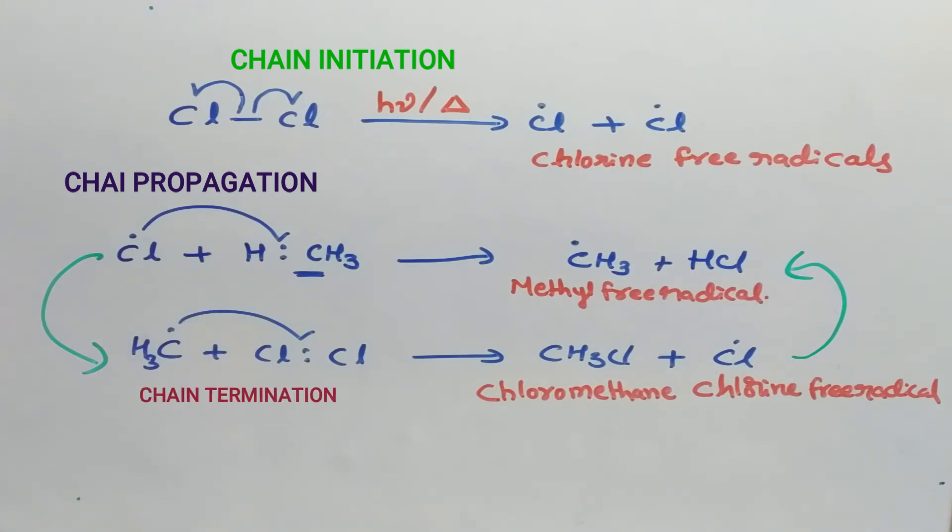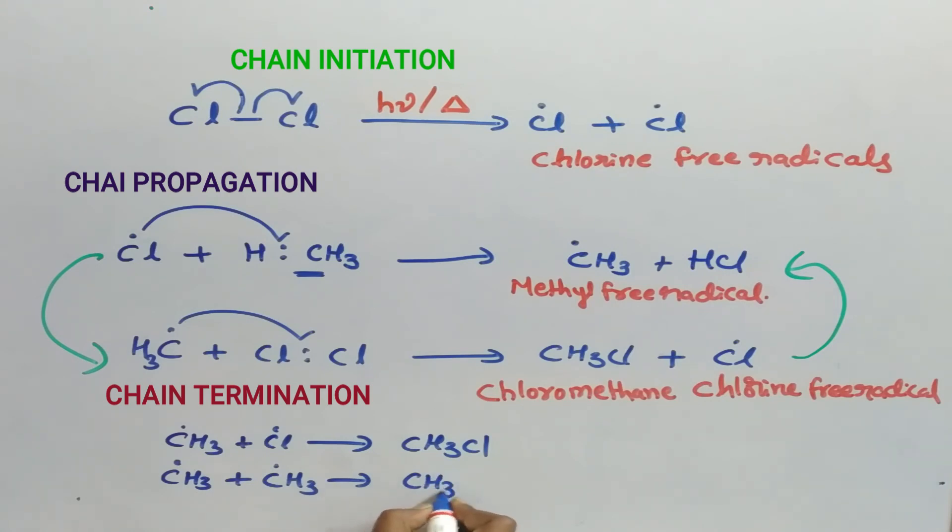Next, chain termination. The radicals in the propagation step may be consumed by other radicals. See, methyl free radical reacts with chlorine free radical and thereby forms chloromethane. Next, methyl free radical reacts with methyl free radical and thereby forms ethane.